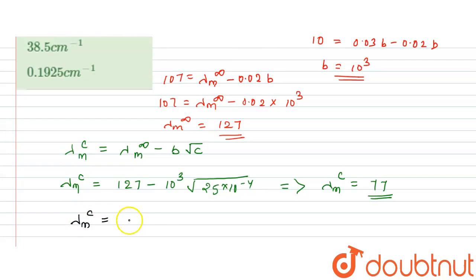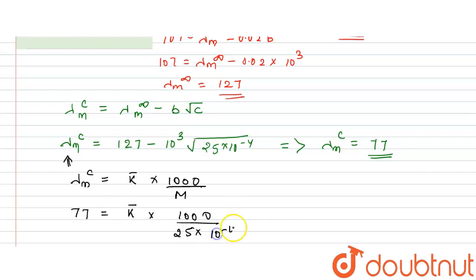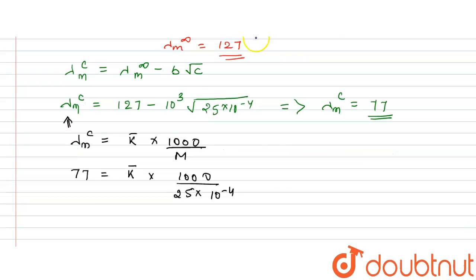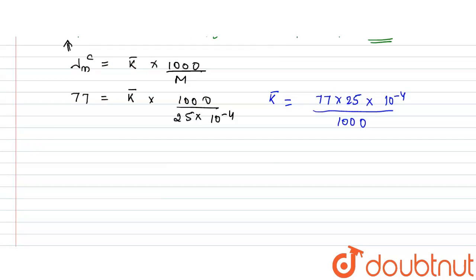We know that molar conductivity at a particular concentration equals κ × 1000 / molarity. Substituting: 77 = κ × 1000 / (25×10⁻⁴). Solving for κ: κ = 77 × 25×10⁻⁴ / 1000. This gives us the specific conductivity κ.